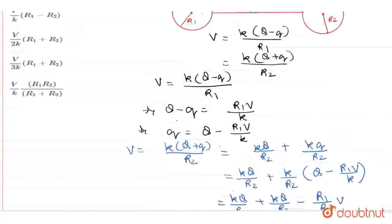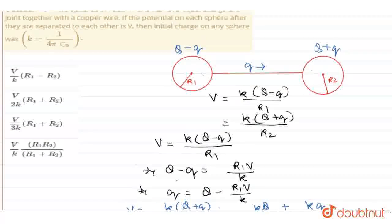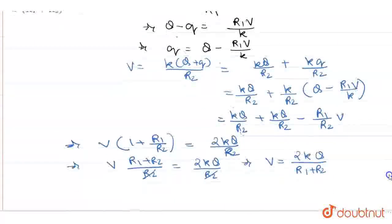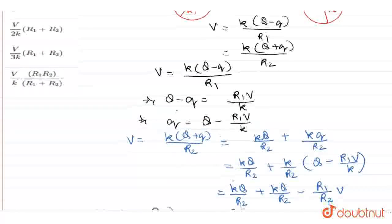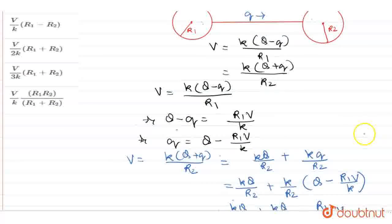This is the value of V. We have to find the initial charge Q. From here we can find that Q = V(R1 + R2)/(2k). So our answer is V(R1 + R2)/(2k), which is option B.